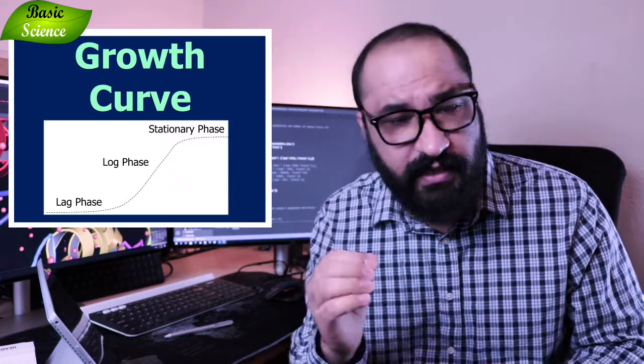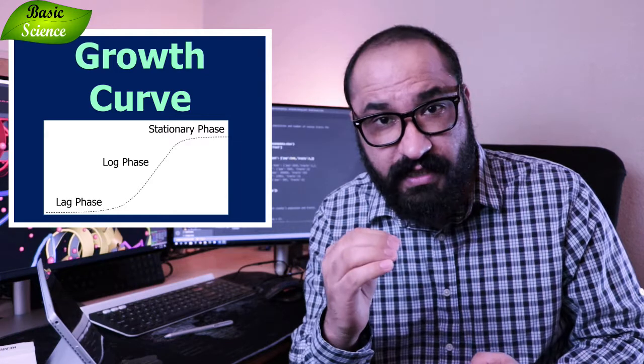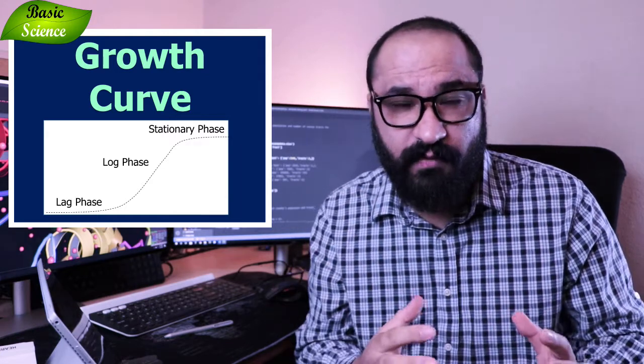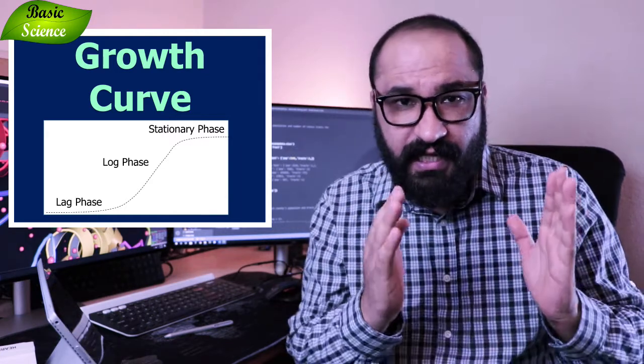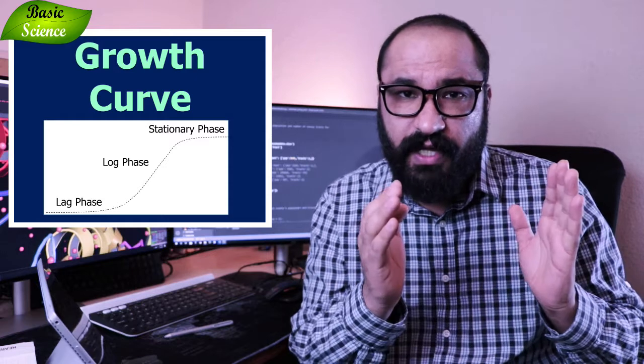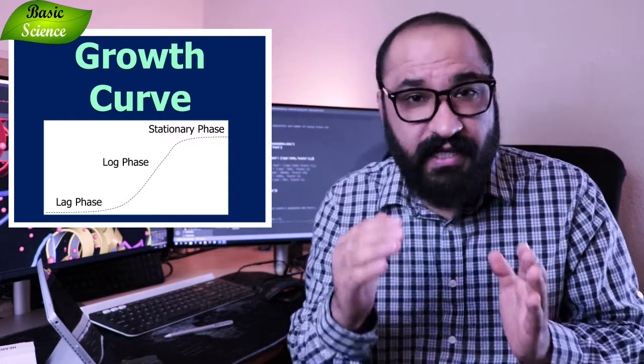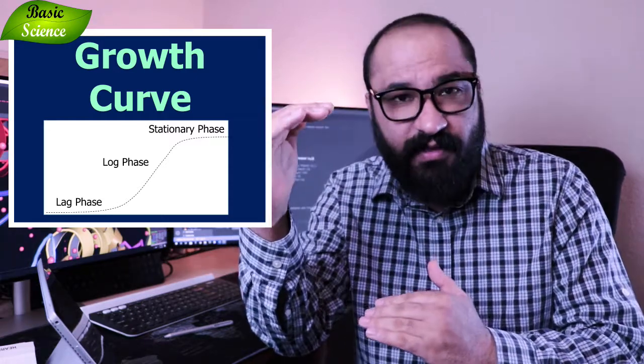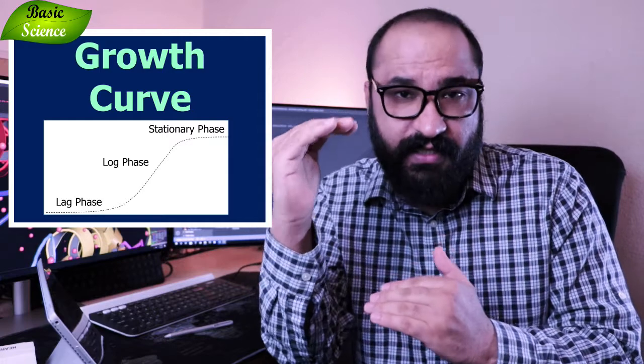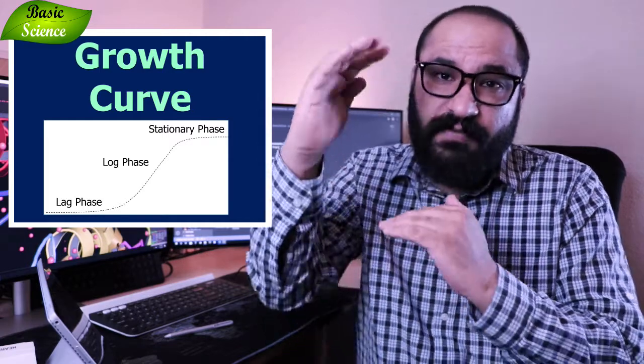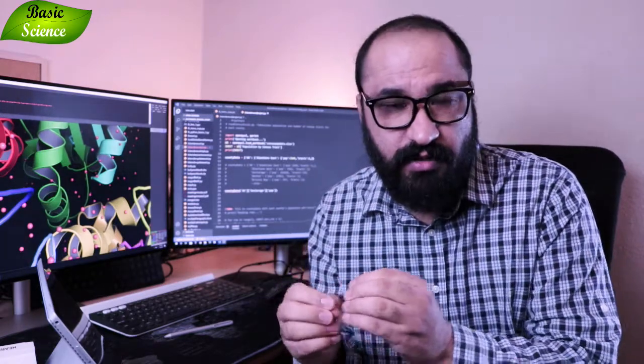So when you perform this experiment in the lab, what you get is data points — numbers. On the basis of your knowledge of the growth curve, you can say this is the time interval of the lag phase, this is where the log phase was, and then you have the stationary phase. You get all those data points and you convert that data into knowledge. That is the main function of your discussion.